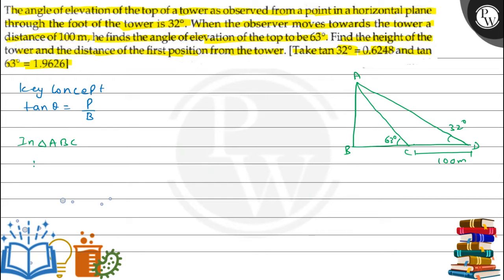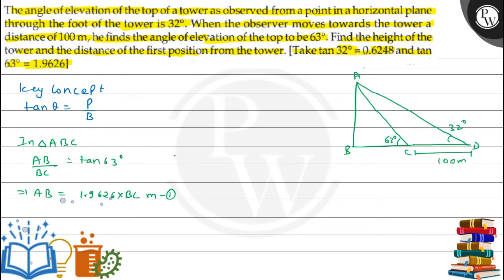In triangle ABC, we can see that AB upon BC equals tan 63°. So AB = BC × tan 63°, which is 1.9626 × BC meters. This is our first equation.